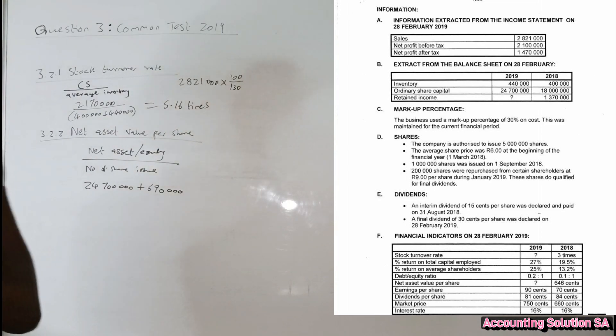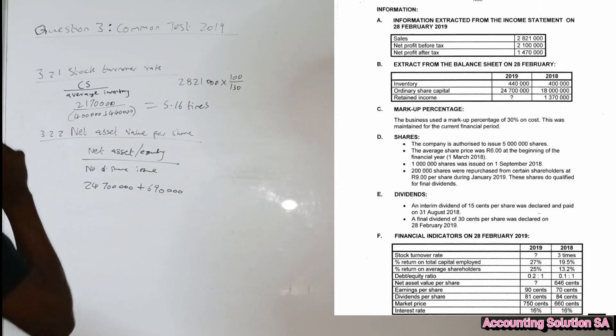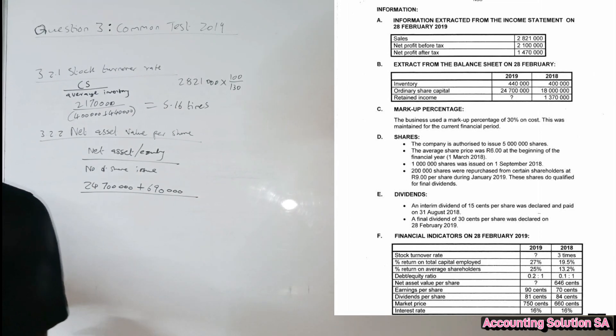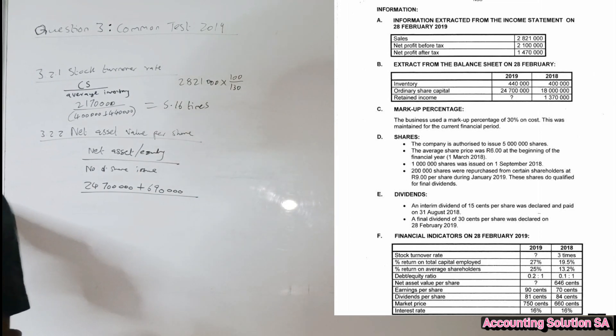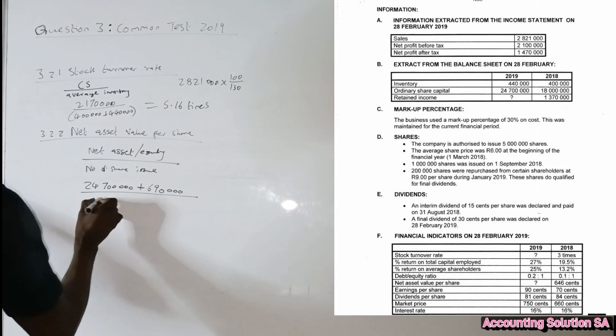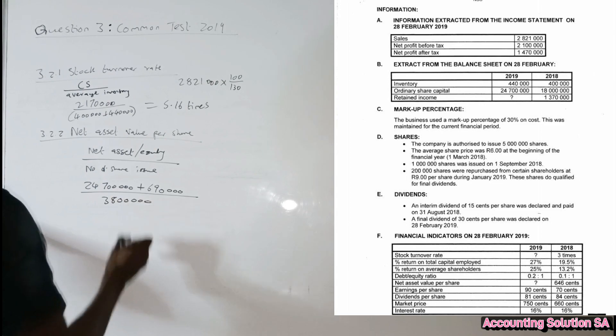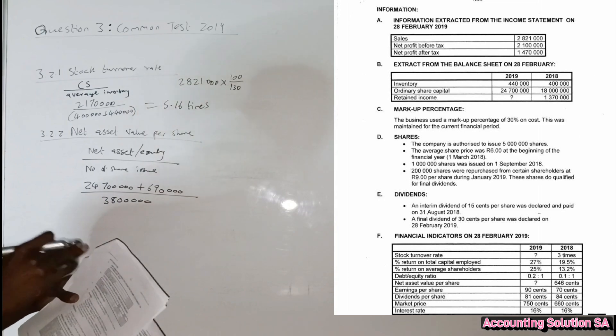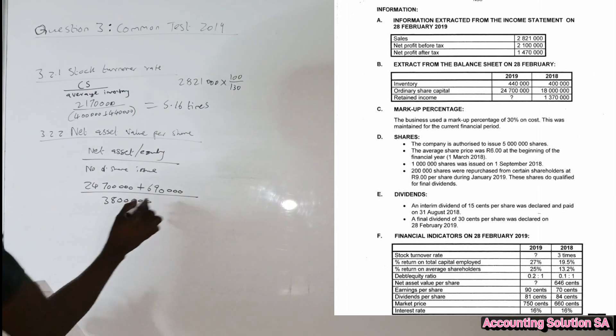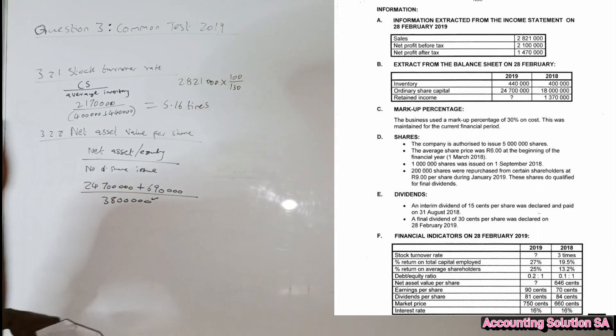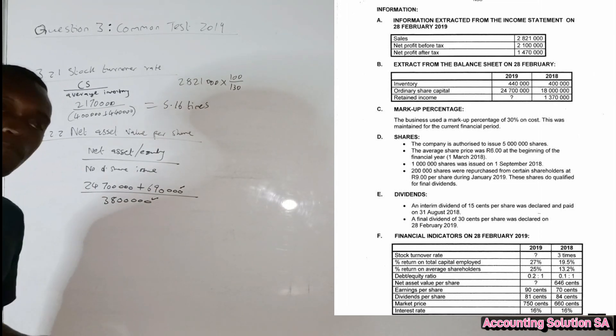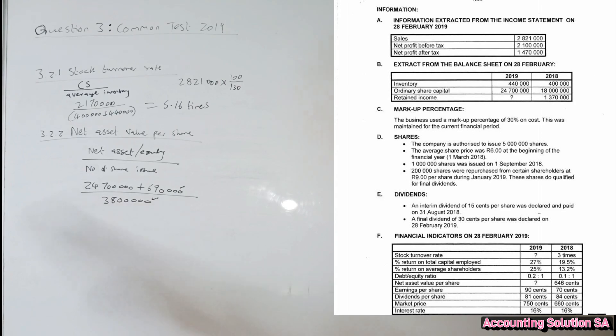Of course in order for you to get this one you must watch the 3.2.1 that we did for this question paper. Then we divide by number of share issued. Number of share issued, it was 3.8 million guys. If you didn't watch the previous one, 3.1, please go and watch it because this amount is from the previous question and this amount is also from previous question.